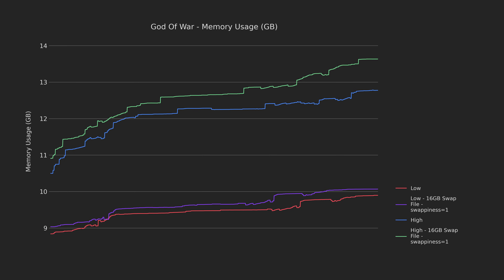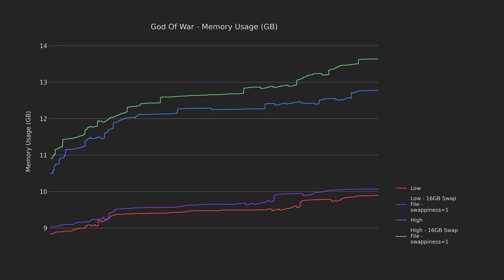Memory still crawls up at the default rate, but it eventually stalls out around 15 gigabytes of RAM and 7.5 gigabytes of VRAM used on all presets. With the crashing out of the way, we can move on to performance.